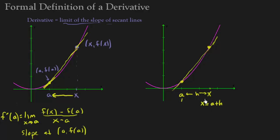So if this was 1 and this was 4, then h would be 3. So now we're just going to use, instead of x, f of x, we're going to use a plus h, f of a plus h.